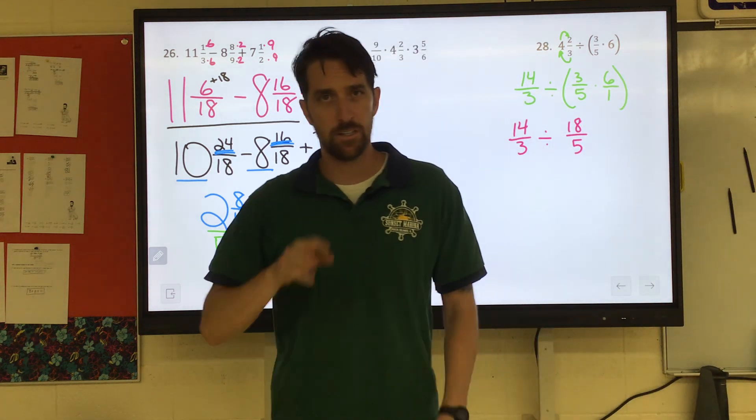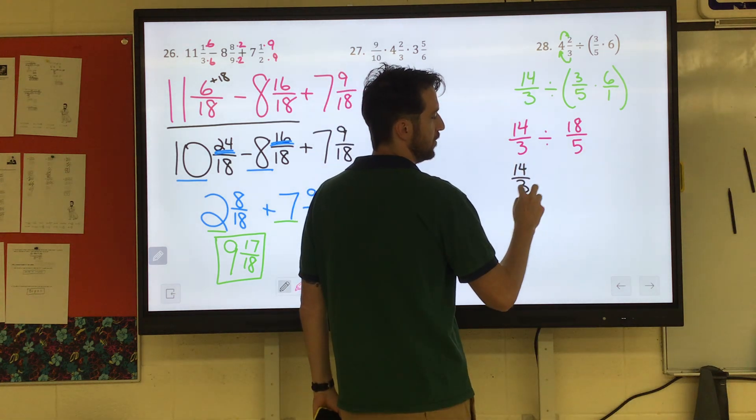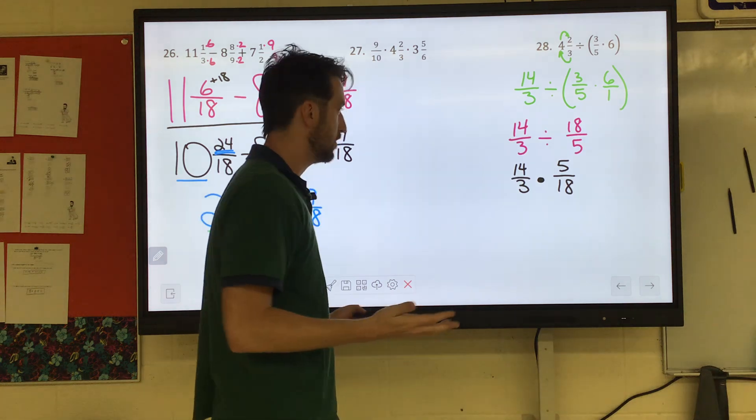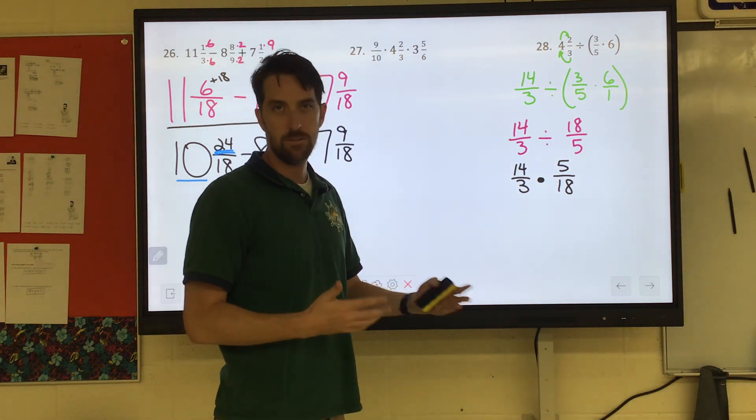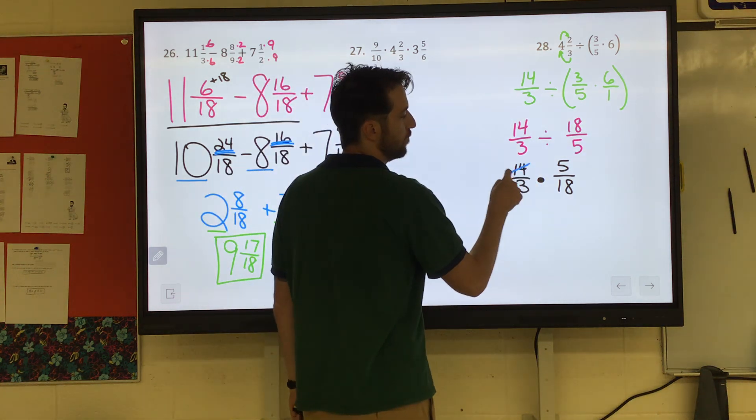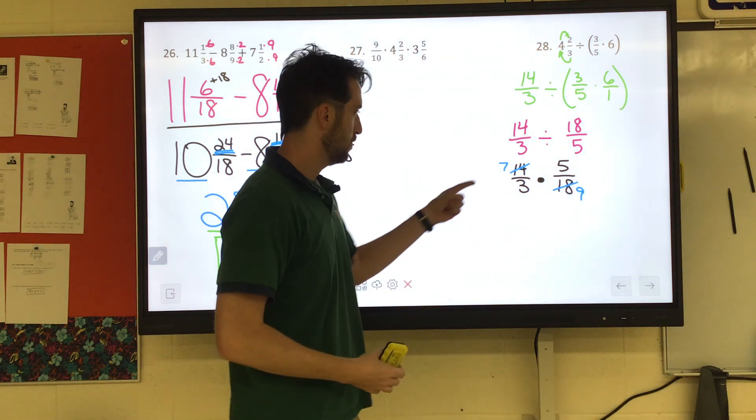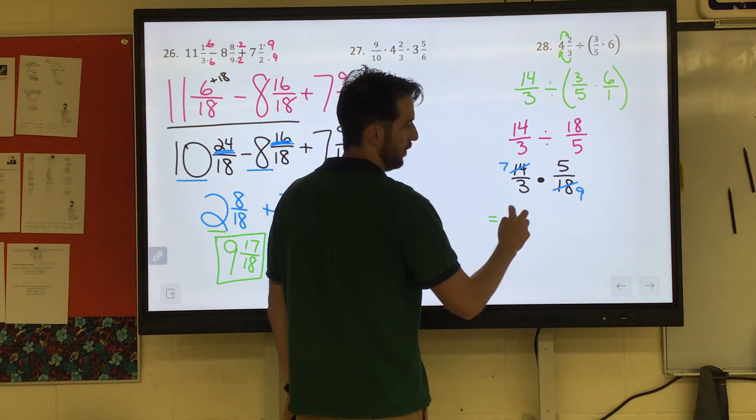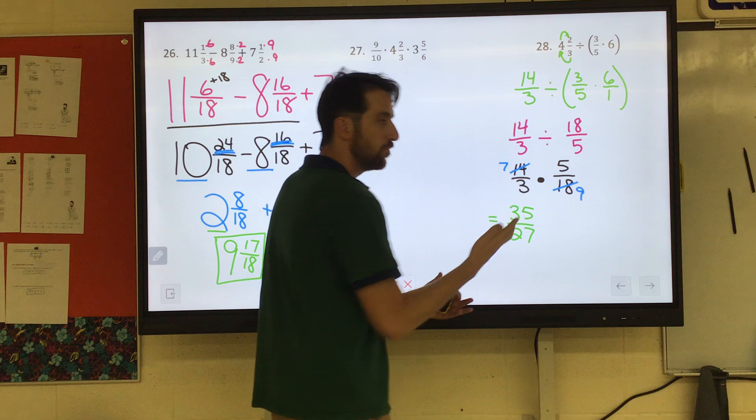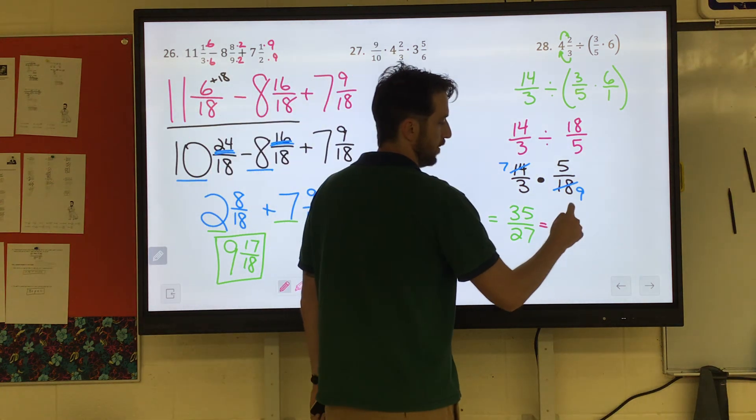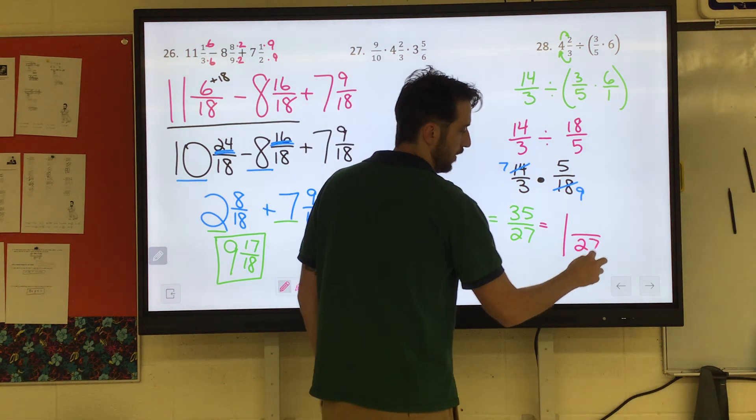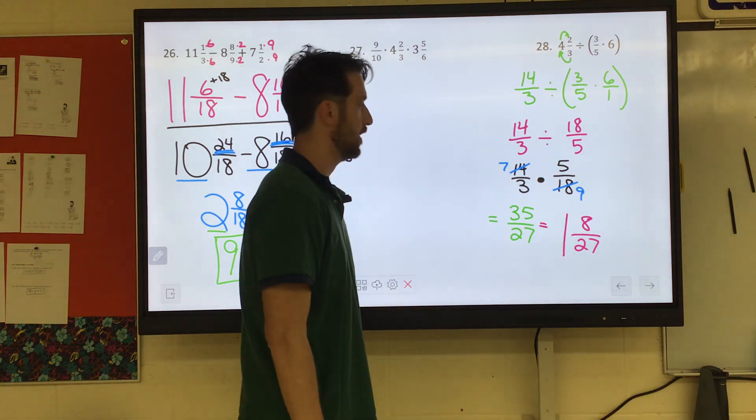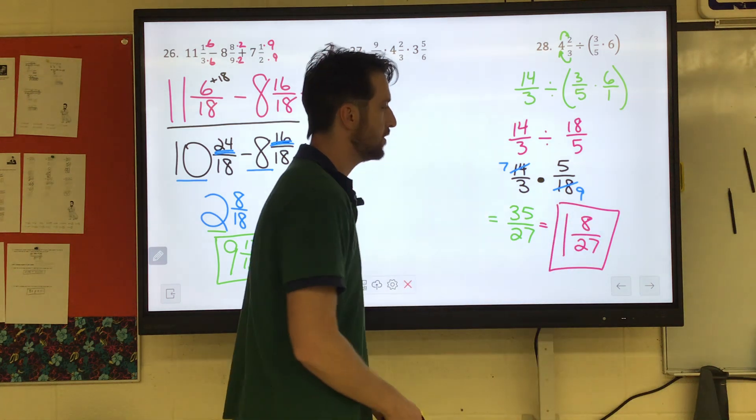And then we do the old keep change flip. Keep that 14 thirds. We're going to change it to multiplication, and we use the reciprocal here. 5 over 18. Now maybe we'll be able to simplify some stuff. 14 and 18 are both even numbers. 2 goes into every even number, so we can cut them in half. Half of 14 is 7. Half of 18 is 9. So now 7 doesn't have anything in common with 3 or 9, and neither does 5. So now we can go ahead and multiply. 7 times 5 is 35. 3 times 9 is 27. That's over 1, right? The numerator is bigger than the denominator. So that would be 1, because 27 goes in there once. And how many leftovers would there be? If we took away 27 from 35, that would leave us with 8 27ths remaining. It can't simplify 8 27ths. So 1 and 8 27ths.